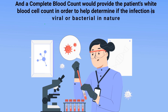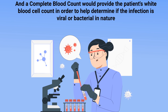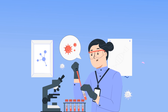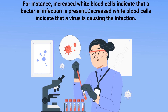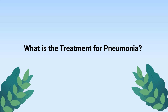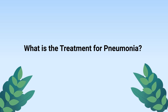A complete blood count provides the patient's white blood cell count to help determine if the infection is viral or bacterial in nature. Increased white blood cells indicate a bacterial infection is present, whereas decreased white blood cells indicate that a virus is causing the infection. So what is the treatment for pneumonia?